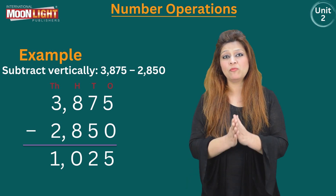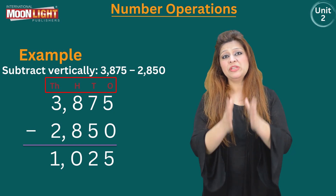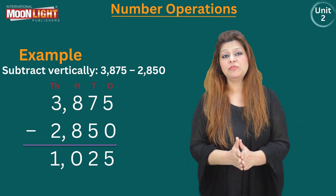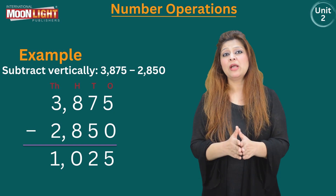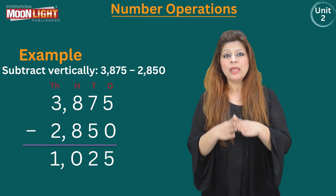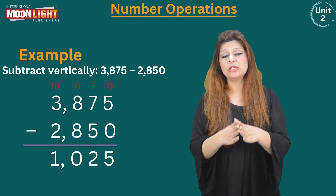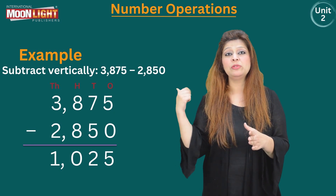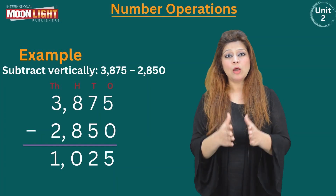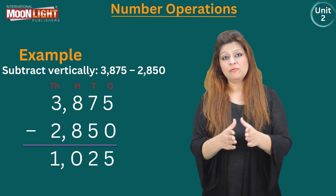We start the numbers from ones, tens, hundreds, and thousands, writing from our right hand side to our left hand side. Then we write the subtraction sign on the second number, and draw a straight line below. This straight line indicates the answer area where we will write our subtraction result.